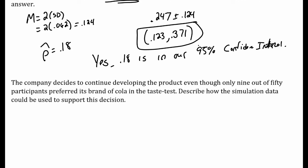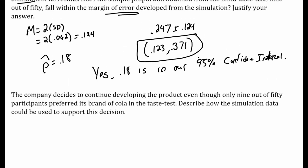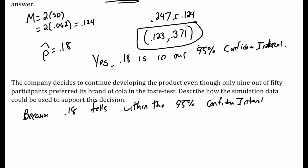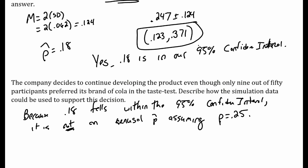The company decides to continue developing the product even though only 9 out of 50 participants preferred the brand. Describe how the simulation data supports this decision. Because 0.18 falls within the 95% confidence interval, it is not an unusual p-hat, assuming the true population proportion is 0.25.